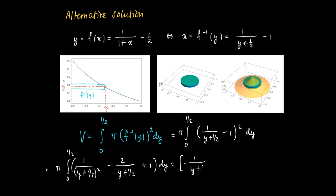So we get as a primitive minus 1 divided by (y plus 1/2) as a primitive for the first part. The second part has as a primitive minus 2 ln(y plus 1/2) plus y as a primitive of the constant 1, in between the boundaries of 0 and 1/2. And if we perform the same calculations as before,